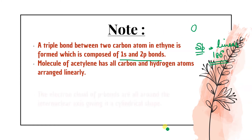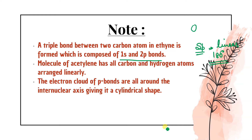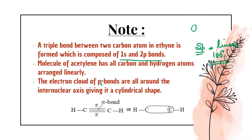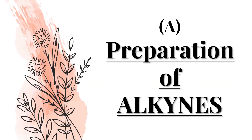Because the carbons are linear, the electron cloud of the pi bonds is all around the internuclear axis, giving the molecule a cylindrical shape due to the pz-pz and py-py overlapping. Now let's look at the preparation of alkynes.